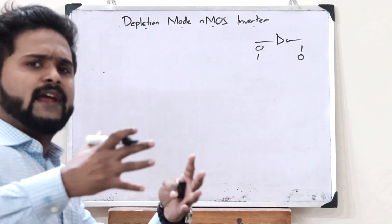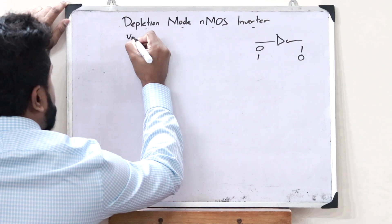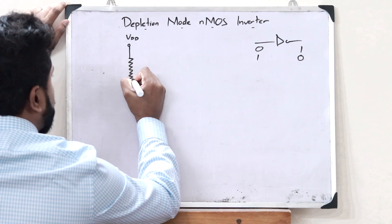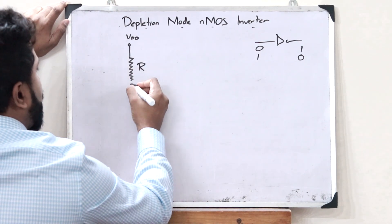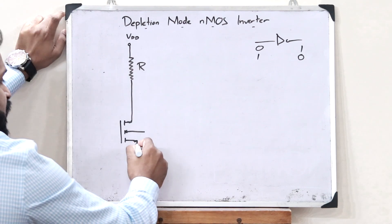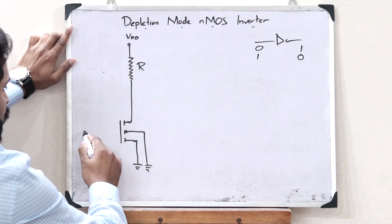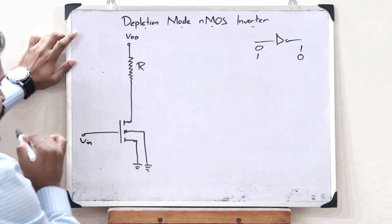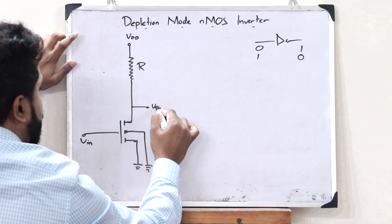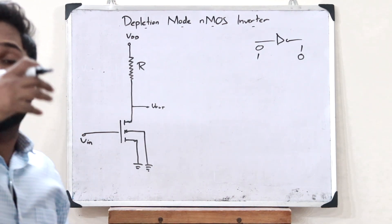The conventional way in which we create an NMOS inverter is: first, we will have a source voltage VDD over here. This is connected to a particular load, say resistance R. And this is now connected to an NMOS transistor. The source is grounded, as well as this particular terminal. This is the gate, so to the gate terminal we give the input VIN. And the output is taken from the drain terminal over here, say VOUT. But in this case, while we use a particular resistor as load, there are a lot of shortcomings, there are a lot of disadvantages.